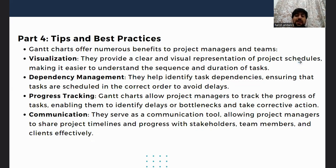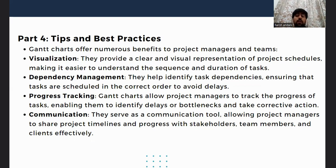The last topic here is best practices used with Gantt charts. There are four major practices. First is visualization — making the chart clear with proper scheduling. Second is dependency management — identifying task dependencies and ensuring proper scheduling. Third is progress tracking — understanding what tasks have been completed and when, to identify bottlenecks. And fourth is communication — providing a clear communication tool for all stakeholders.